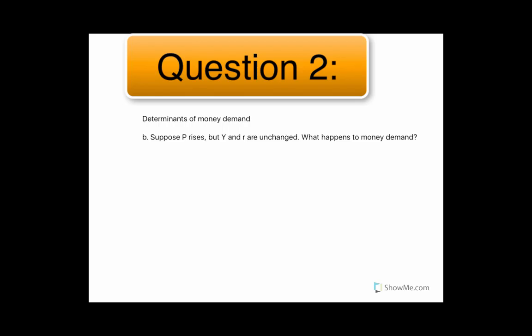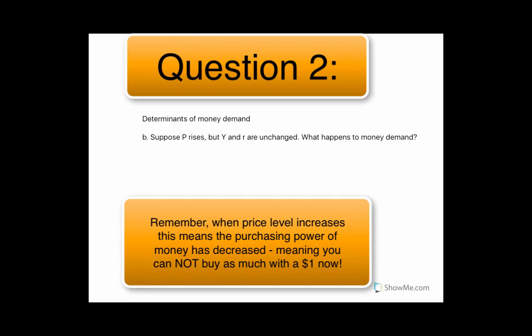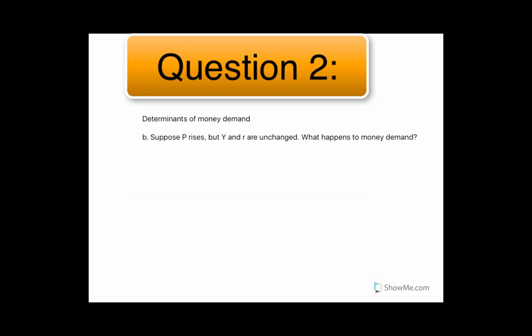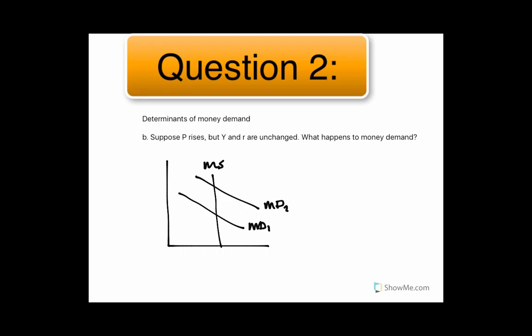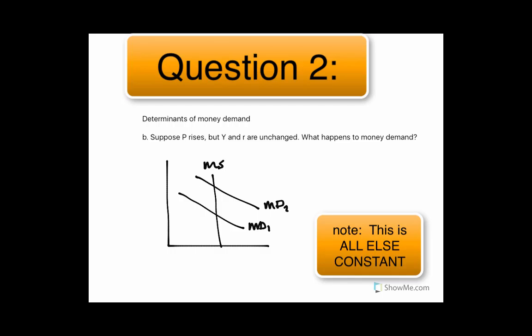So if the price level rises, all it's saying is that the monetary value — the dollar amount — that you see when you go to buy something is higher. So what that's going to do is make you want to hold more dollars, because everything that you purchase now has a higher nominal value. So if the price level rises, money demand goes up, from money demand one to money demand two. It's just saying that when the amount of dollars you have to pay to buy a particular fixed good goes up, your demand to hold dollars is also going to go up.